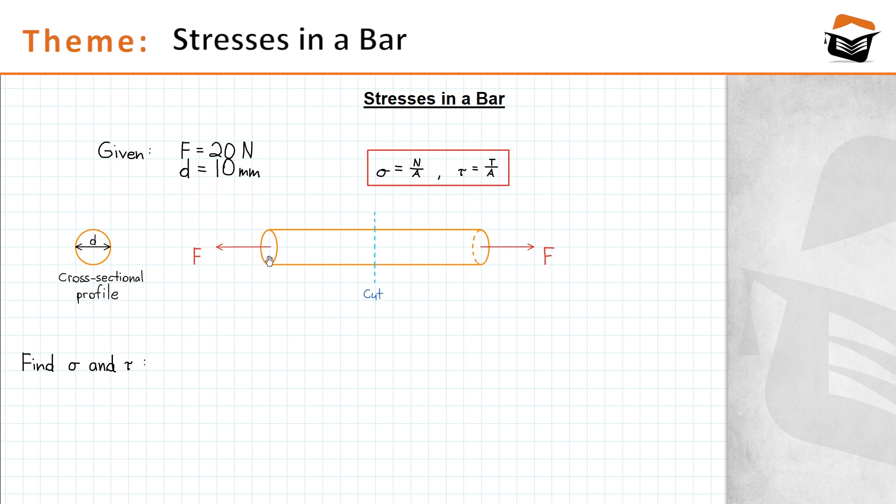If you look at the cross section of the beam you will notice that the cross section has a circular shape and the diameter of the circle is 10 millimeters. In the following we're gonna make a vertical cut for the bar to determine the internal stresses. The stresses of interest are the normal stress Sigma and the shear stress Tau.